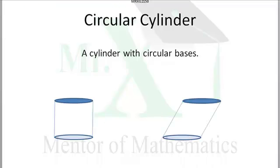These are both circular cylinders. A cross section of each will give you a circle. However, only one is a right circular cylinder — the one that looks like a coffee can, tuna can, hockey puck — the sides are straight and perpendicular to the bases. That's a right circular cylinder.